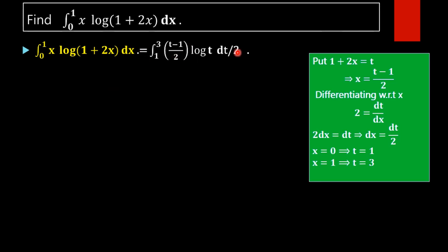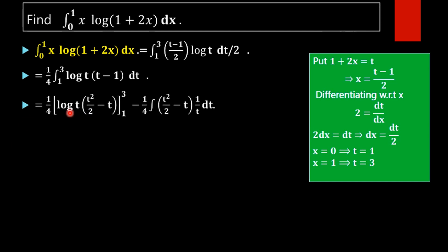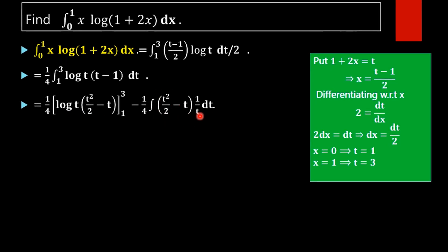Taking the factor of 2 outside, the integral becomes (1/4) times the integral from 1 to 3 of log(t) times (t minus 1) dt. We now apply integration by parts, taking u equal to log(t) and v equal to (t minus 1). So the expression becomes (1/4) times: log(t) times the integral of v, which is t²/2 minus t, minus the integral of (t²/2 minus t) times the derivative of log(t), which is 1/t, dt.